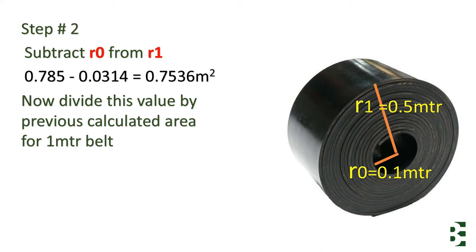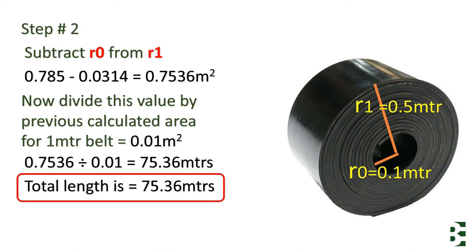Here you can see it was 0.01 meter square. By dividing, you will get the length of the roll belt. Here you can see we have the result of seventy-five point three six meters.